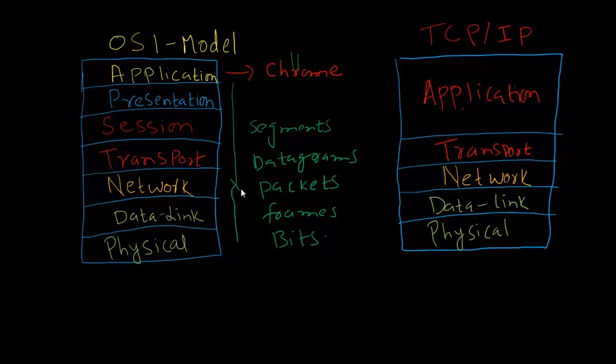As it flows downwards, it's converted into a form that's understood by that particular layer. Eventually, in the end, we see something in the form of zeros and ones. This is what happens in the physical layer—that's why it's called bits: zeros and ones.